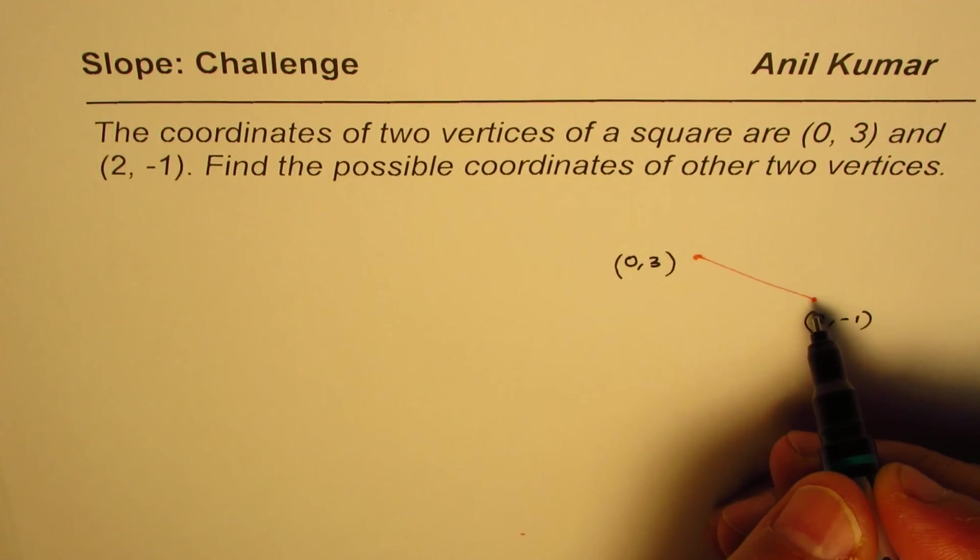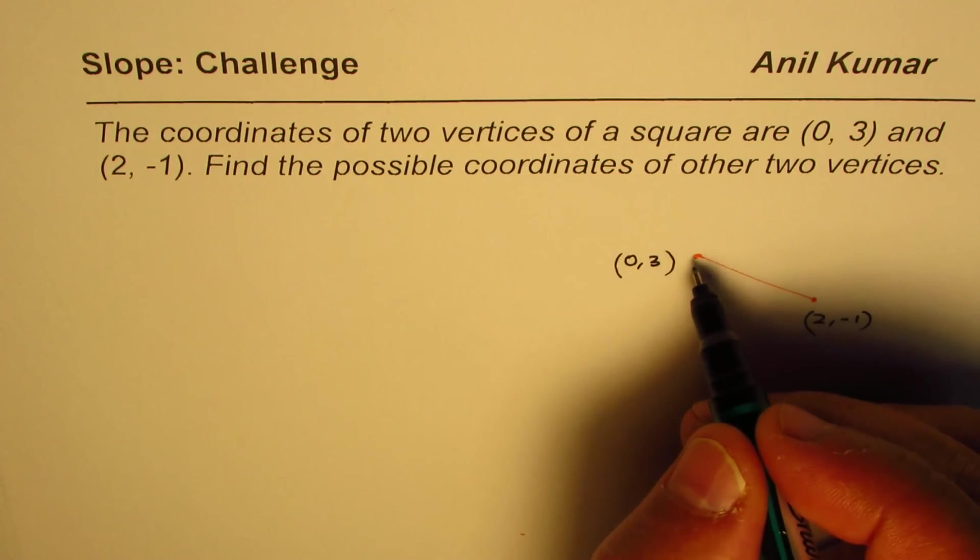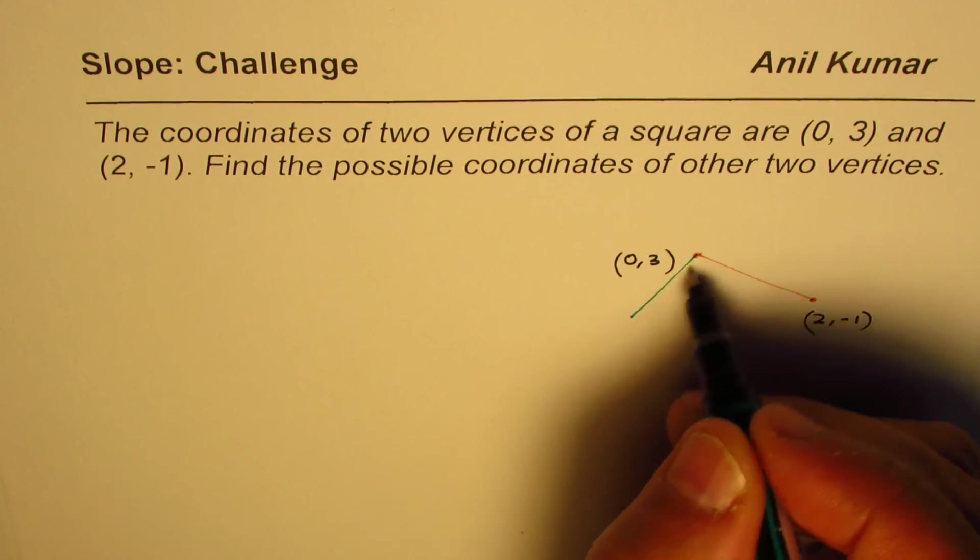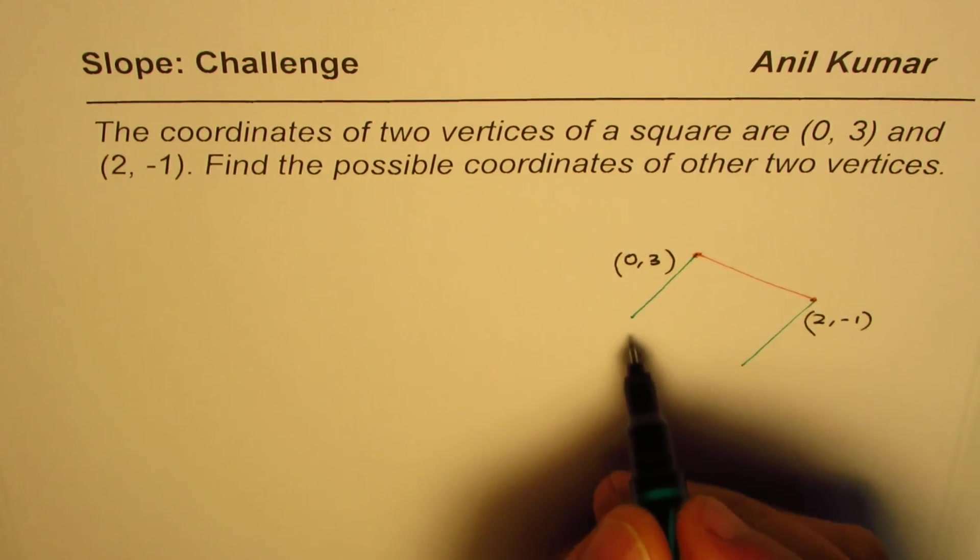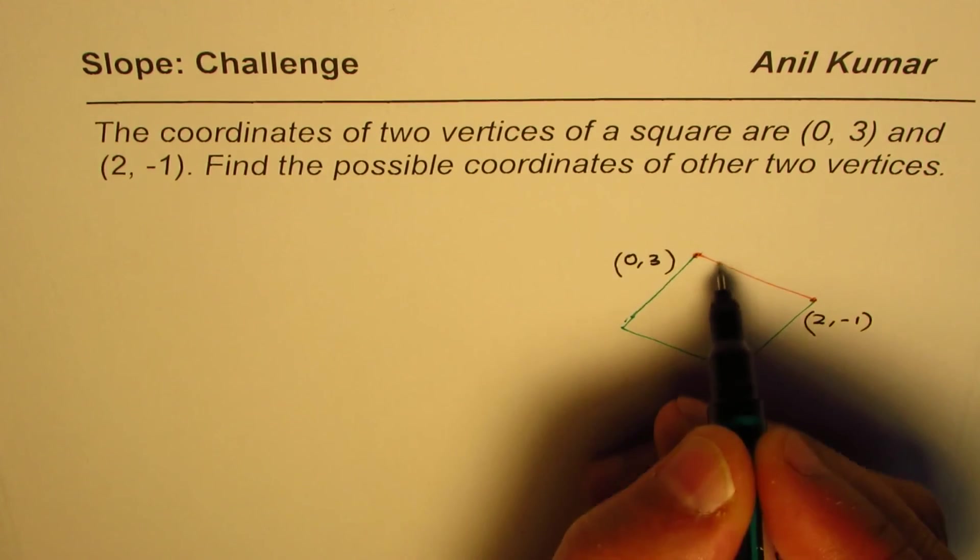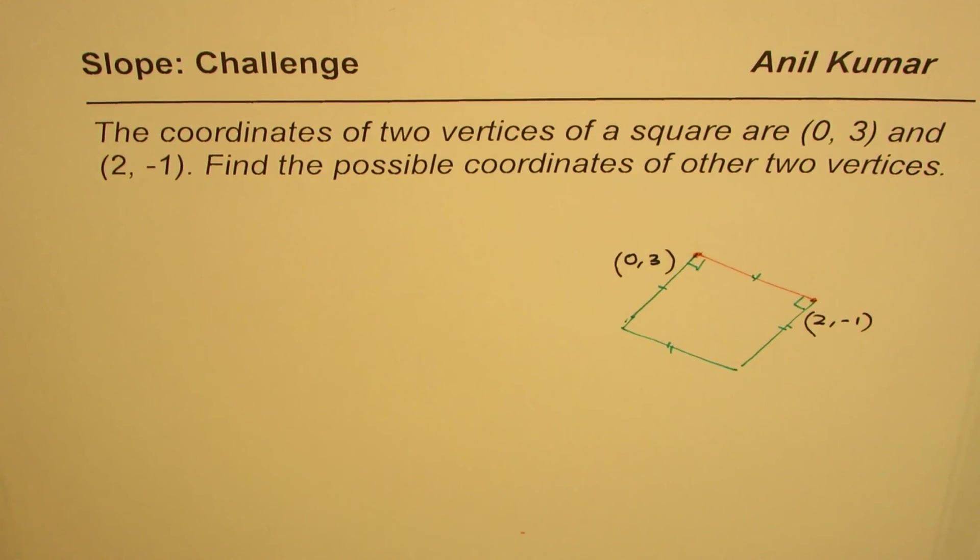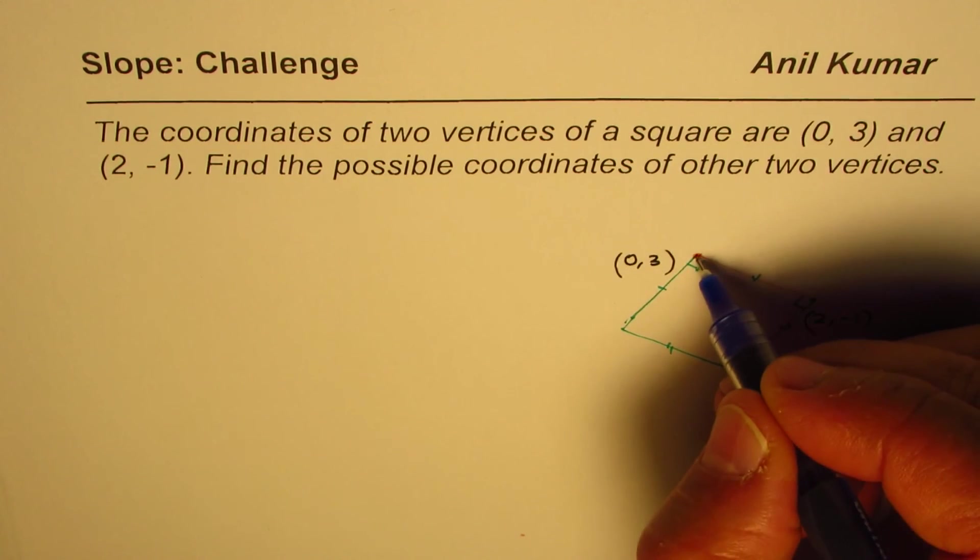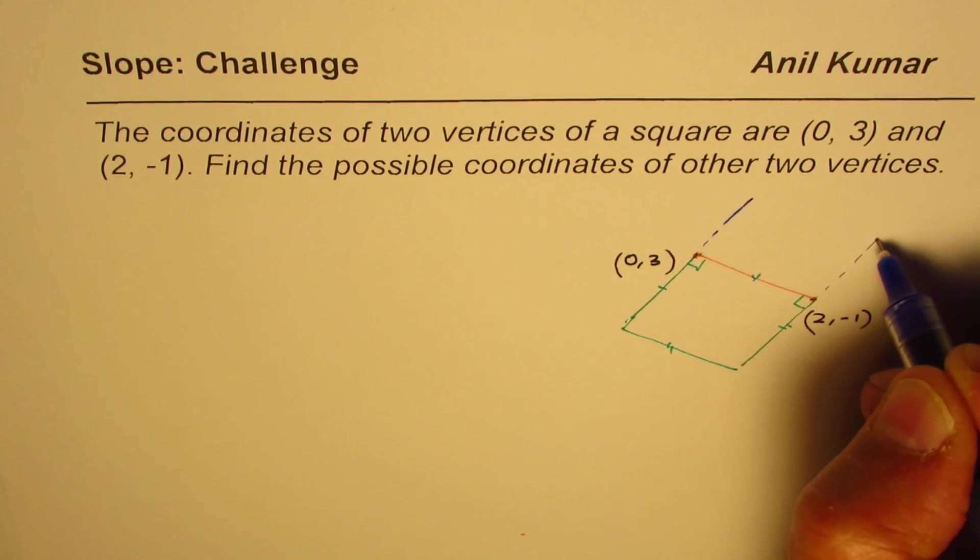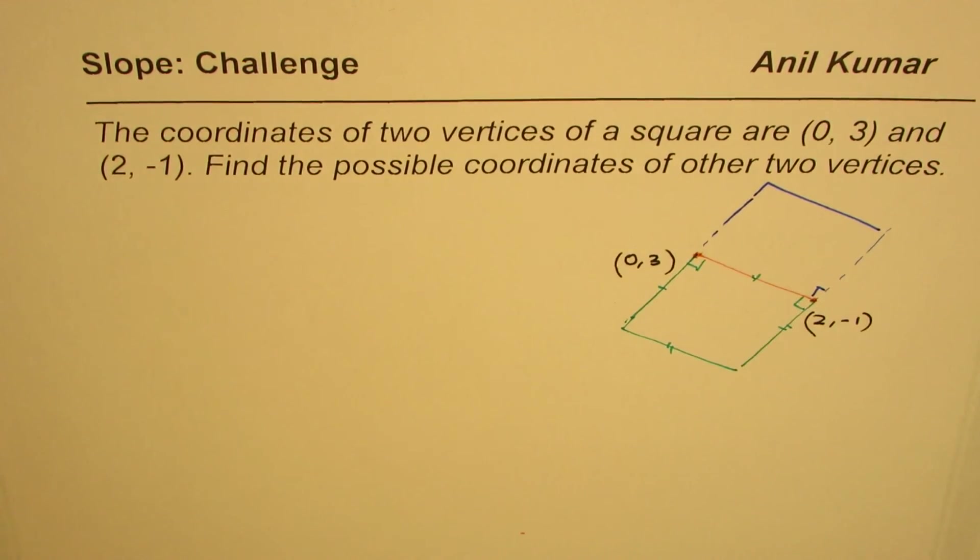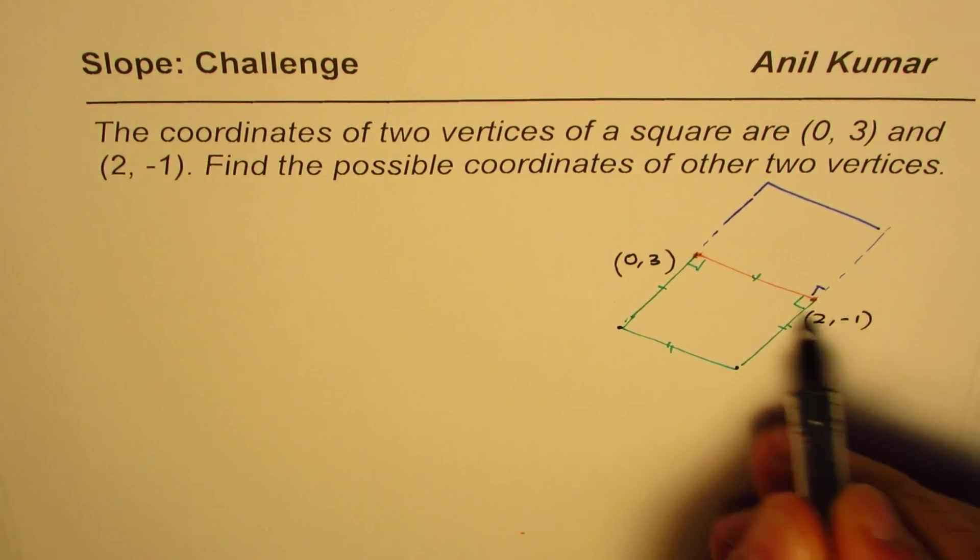There are a couple of possibilities. This is one side of the square, and the other sides could be on this side or that side. In both cases we could form a possible square with equal sides and right angles. So these are two possible solutions.